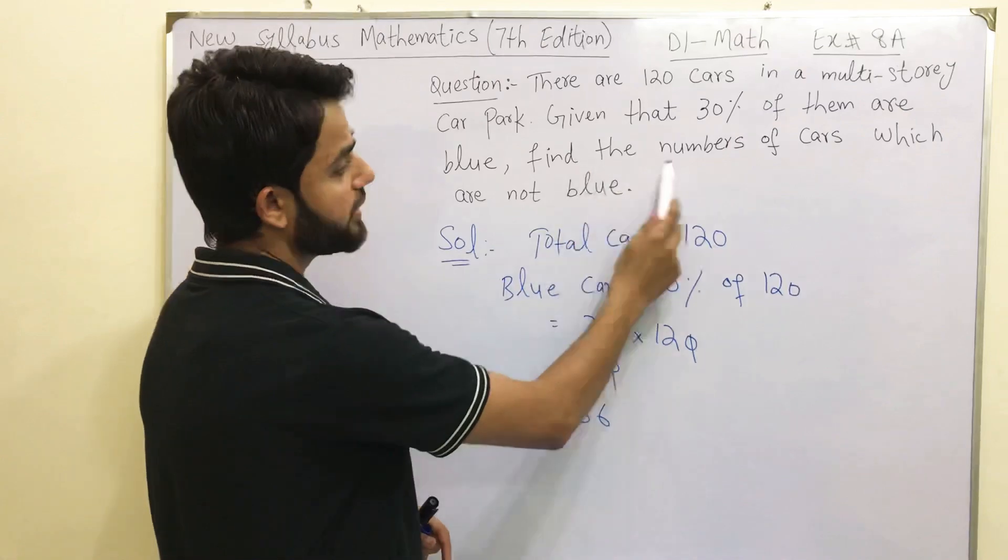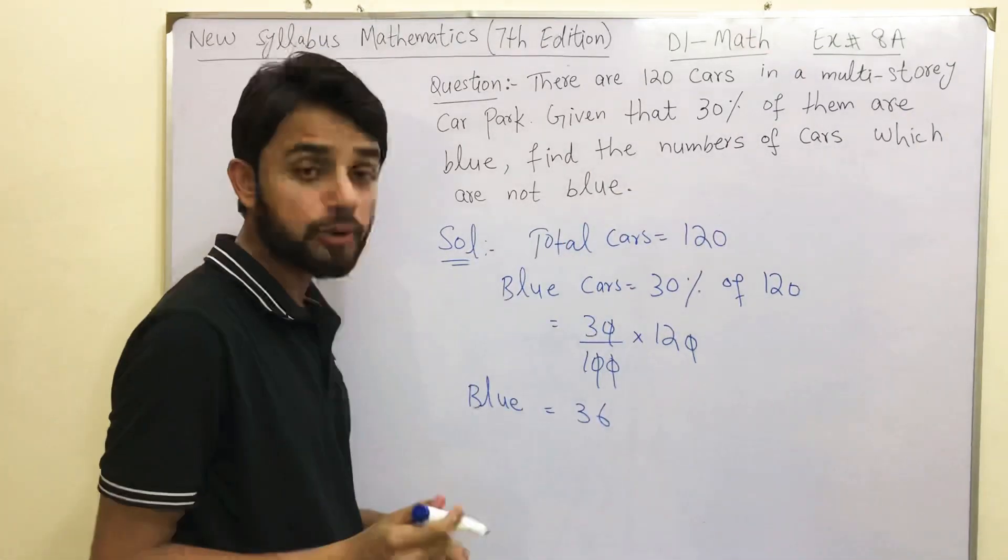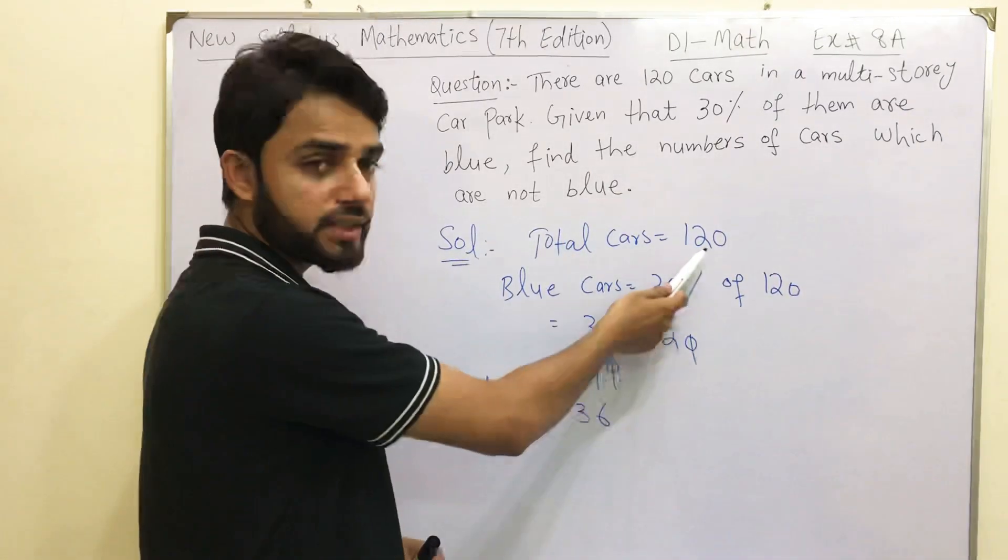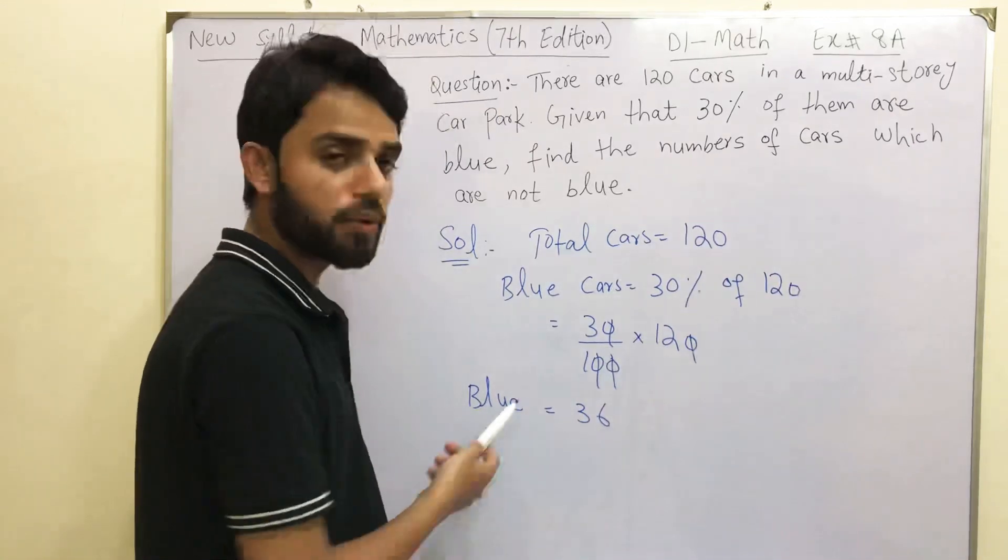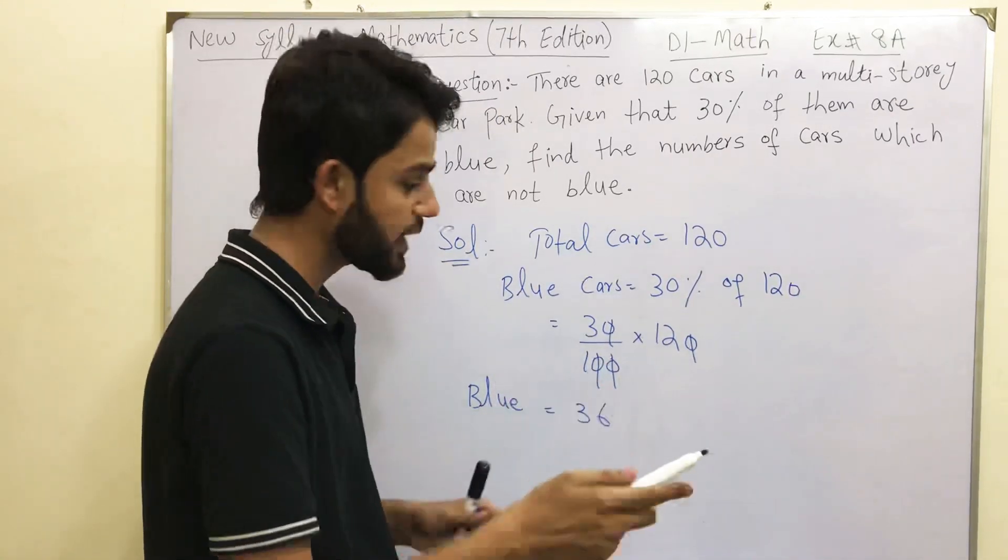We need to find out, find the numbers of cars which are not blue. So we know that there are 120 total cars and we know that how many of them are blue. Subtract it and you will get the answer.